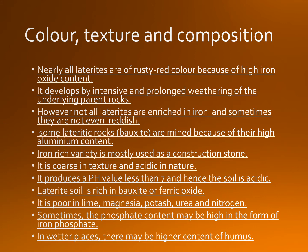It produces a pH value less than 7 and hence the soil is acidic. Laterite soil is rich in bauxite or ferric oxide. It is poor in lime, magnesia, potash, urea and nitrogen. Sometimes the phosphate content may be high in the form of iron phosphate. In better places there may be a higher content of humus.